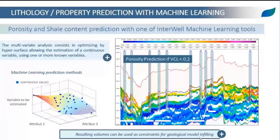To summarize this case study: starting only with well data and seismic gather files, reliable angle stacks were generated. We then performed elastic seismic inversion to obtain P and S impedance models, which we used to predict V-clay and porosity in sand bodies. These two volumes can directly be used as constraints for geological model infilling.